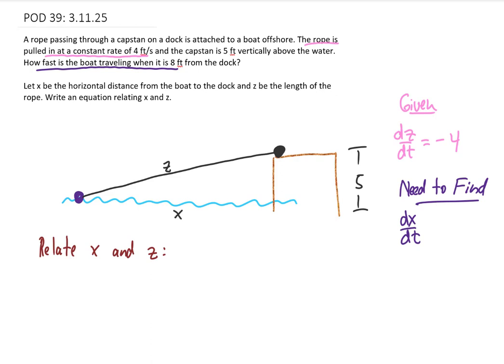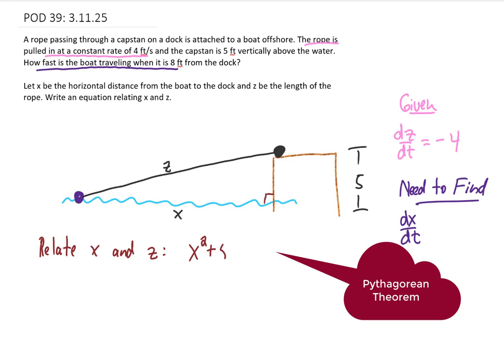We can relate the variables x and z if we notice that there is a right triangle formed, with the two shorter sides being x and 5 and the hypotenuse being z. That means that x squared plus 5 squared equals z squared. Then with all of these related rates problems, we are going to differentiate with respect to t.